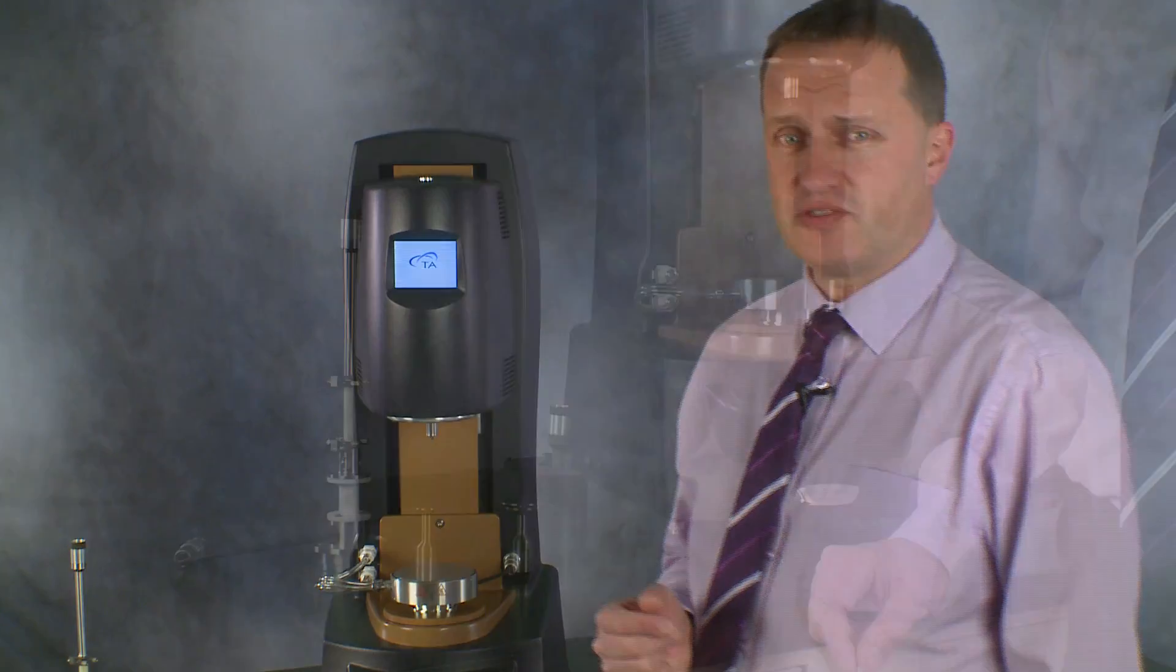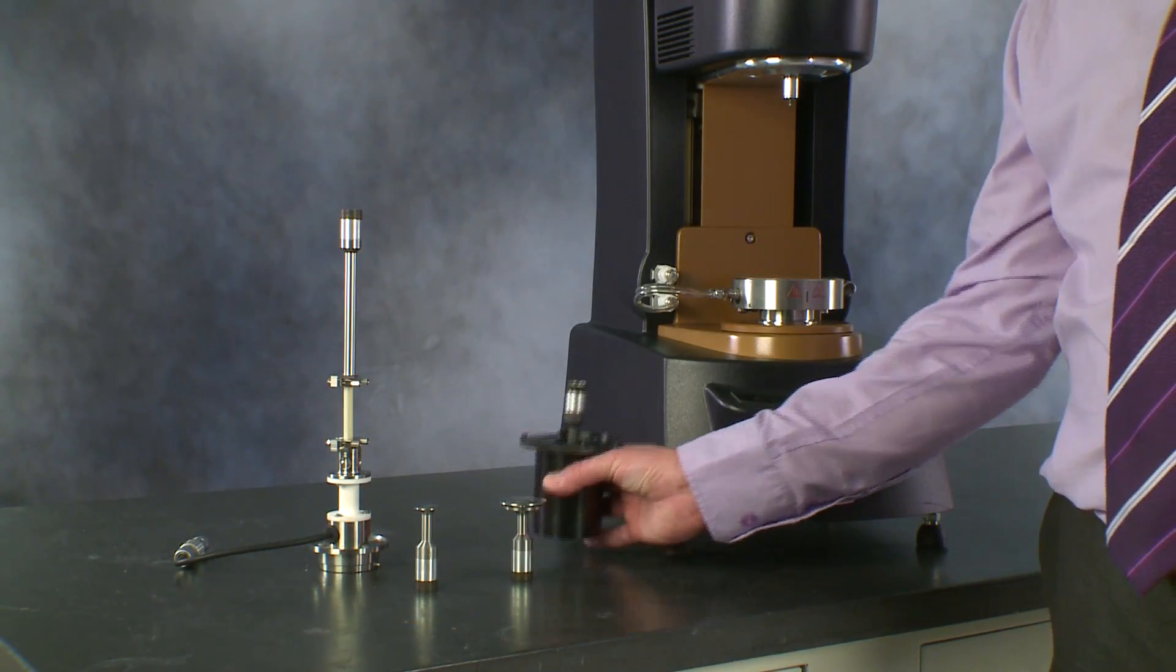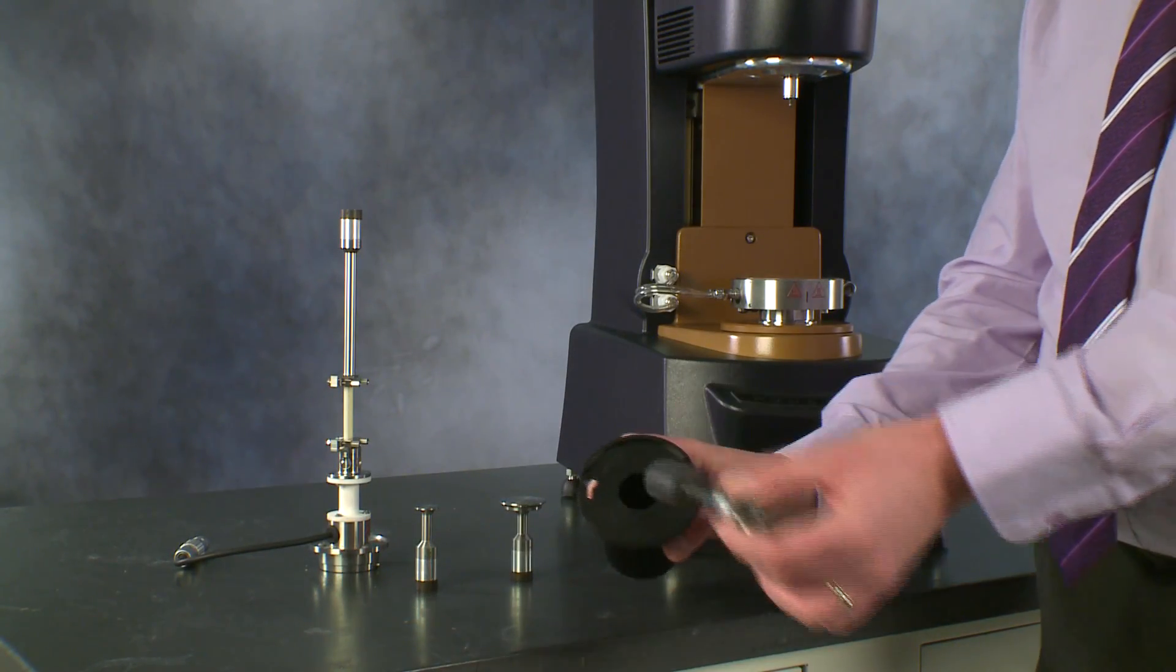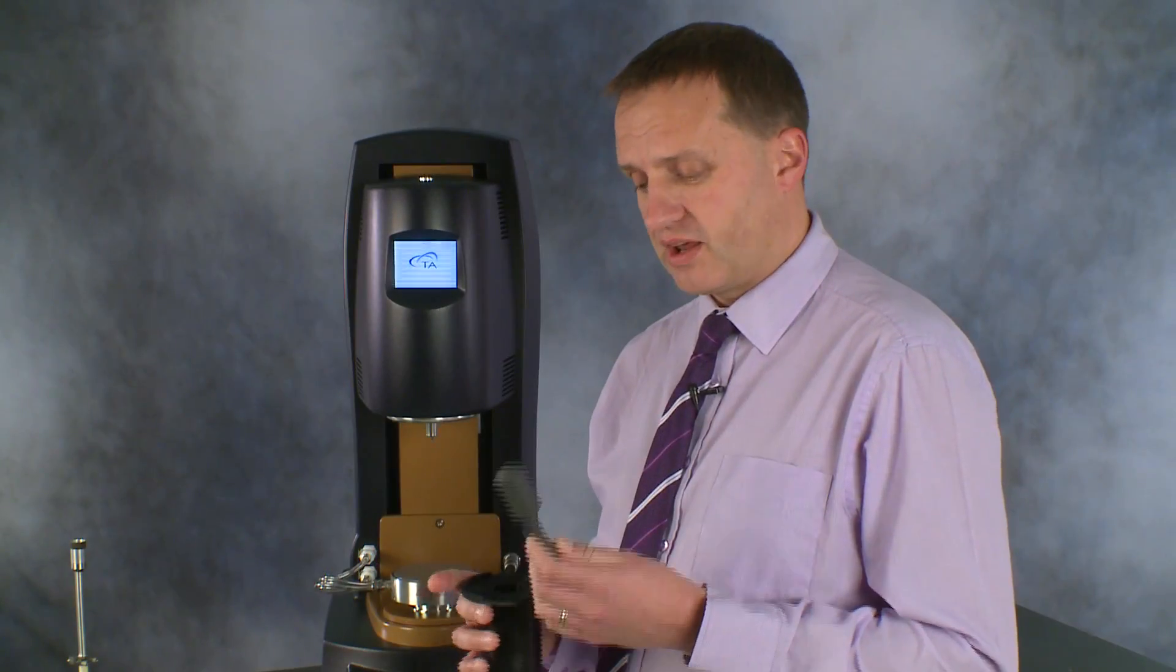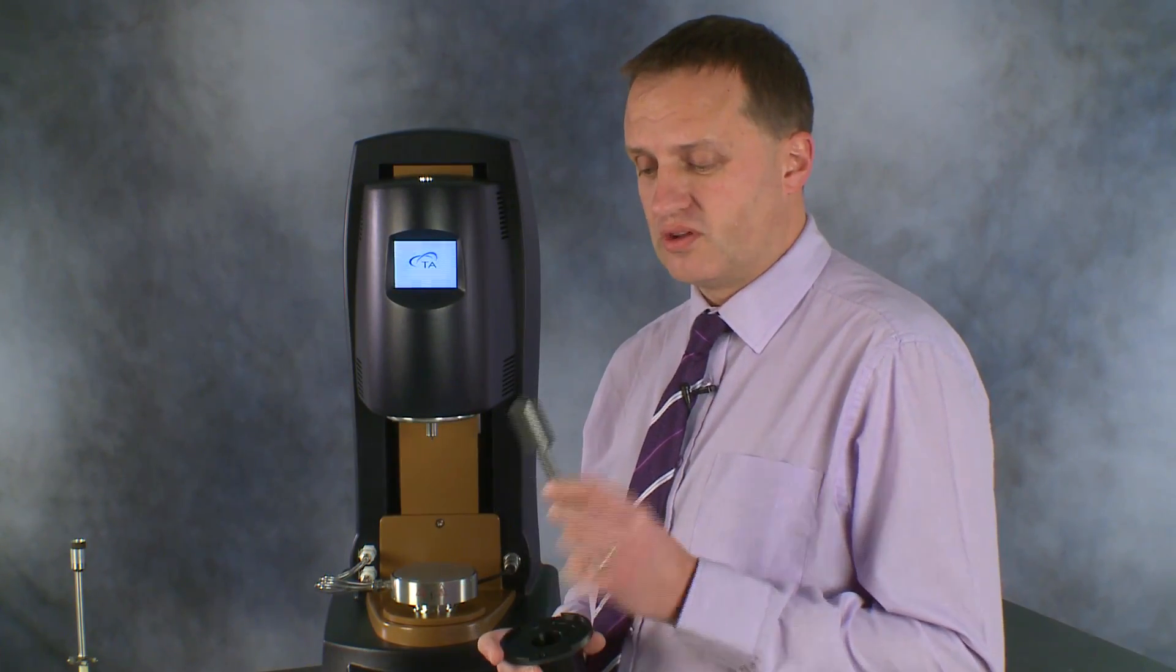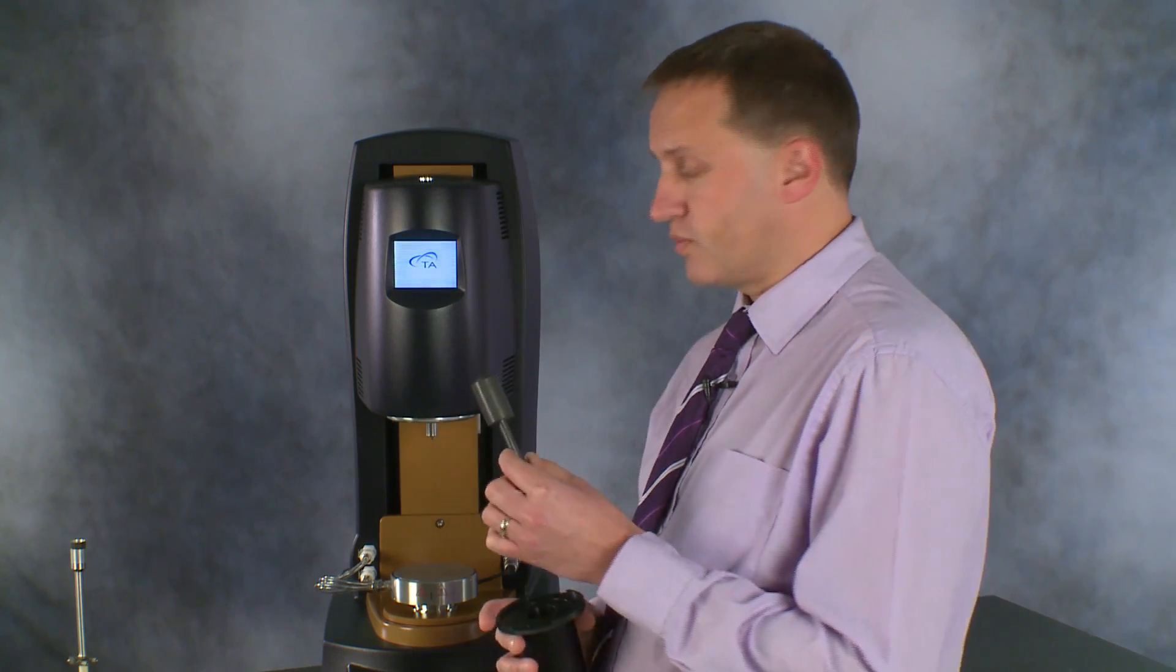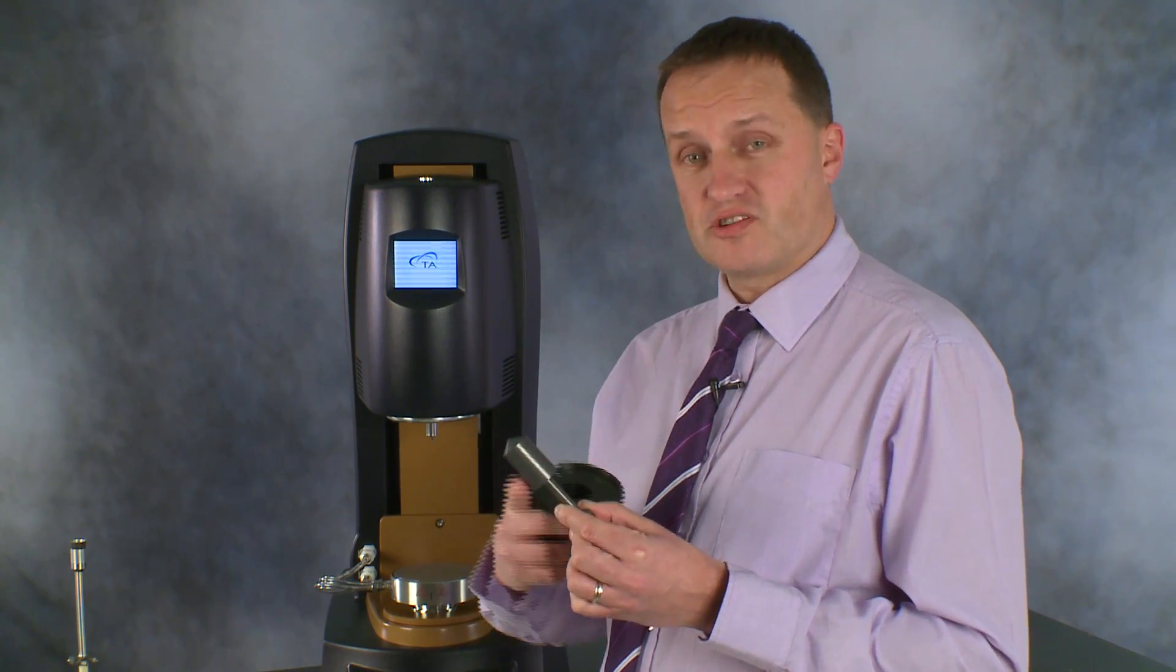The concentric cylinders are usually chosen for low viscosity fluids because the sample can be contained within a cup and it gives us the largest surface area to deal with for being the most sensitive. The instrument will apply a force and it's applied over the largest surface area.